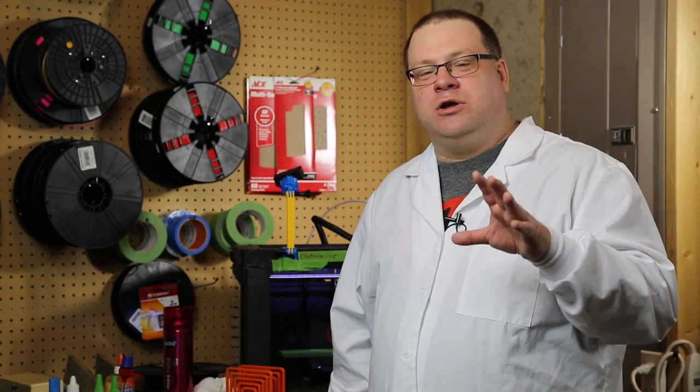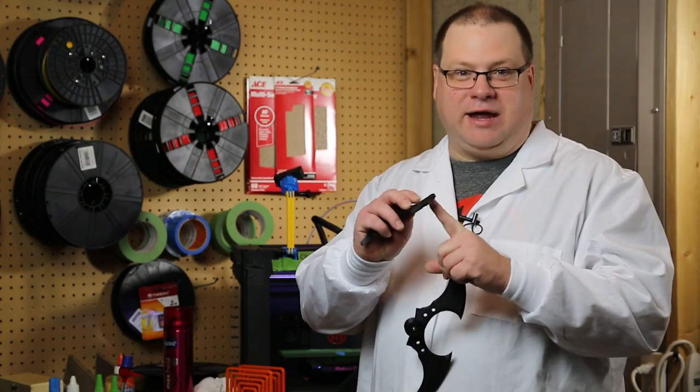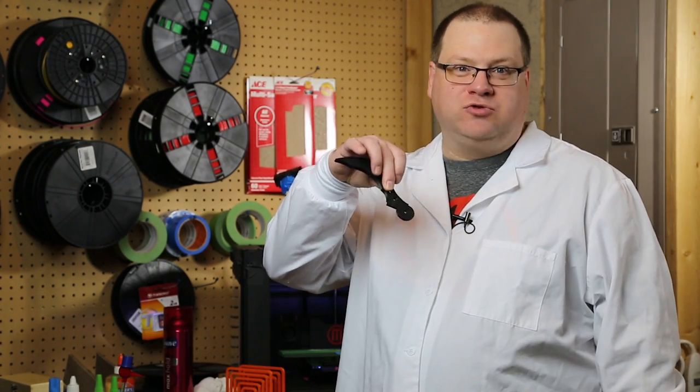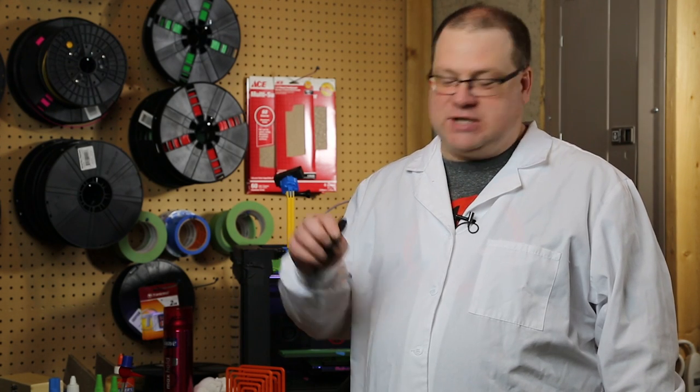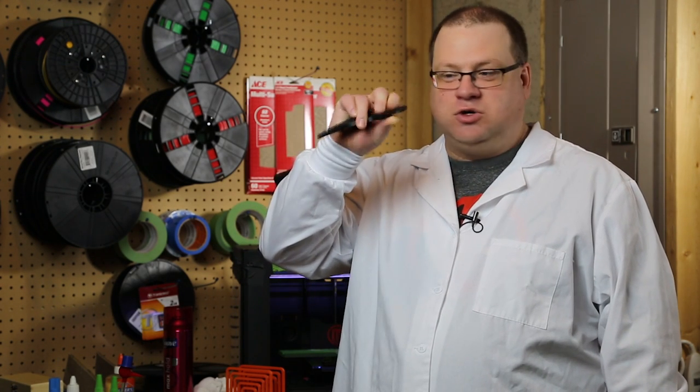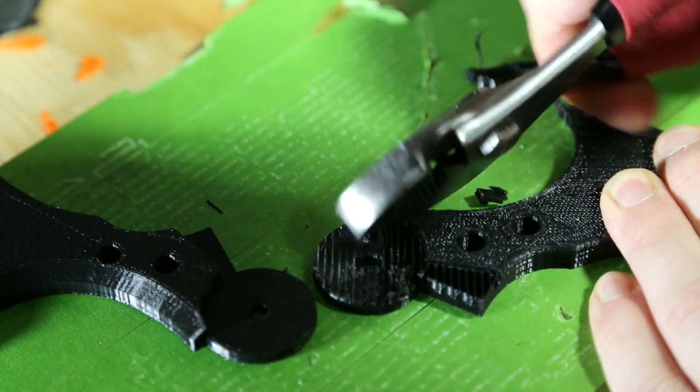One thing I didn't show you earlier was turning on supports for this particular model. This piece has some overhangs, and when you're printing overhangs, you don't want it to droop because a 3D printer can't print in midair. So you use supports, and that builds it up and gives it something to hang on to when it gets to this part of the model. How do you get the supports off? Kind of the same way you get the rafts off. You just pry it off.